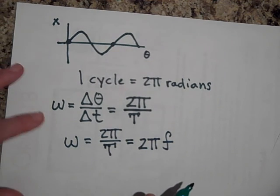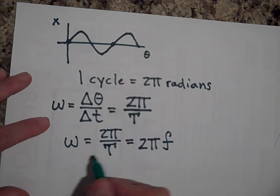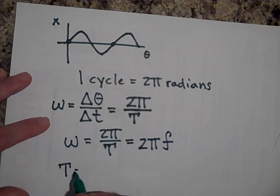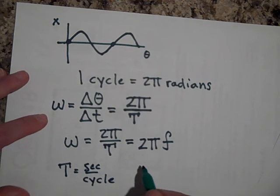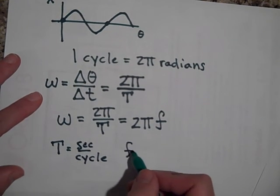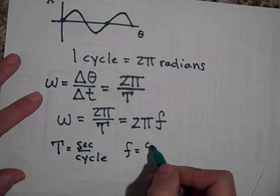Okay, so again, what is the unit for the period? It's seconds per cycle. What's the unit for frequency? It's cycles per second.